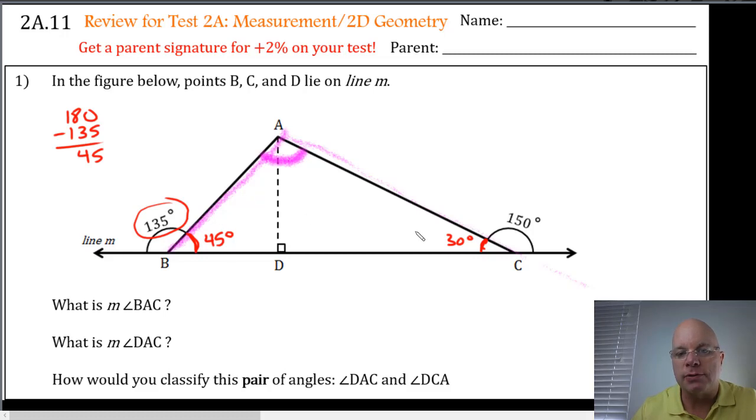Now we have two angles of the three angles of the triangle. We remember that all the angles of the triangle have a sum of 180 degrees, so I can use this relationship. 180 minus the sum of these two angles that I know, 45 plus 30, or 180 minus 75 is 105 degrees. So angle BAC, this angle, is 105 degrees.